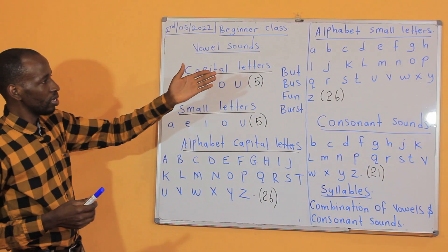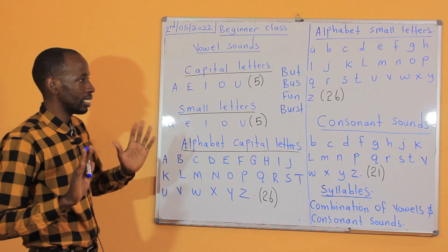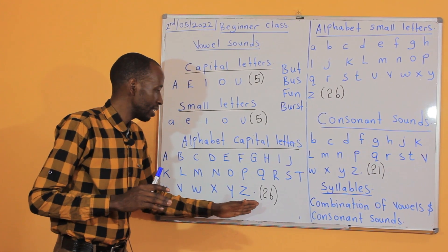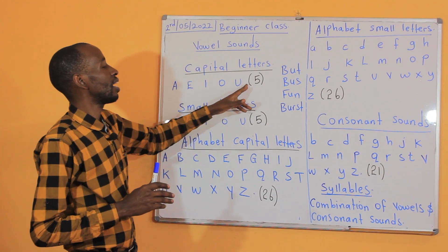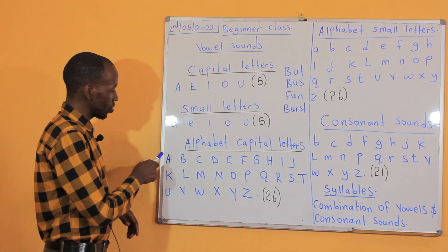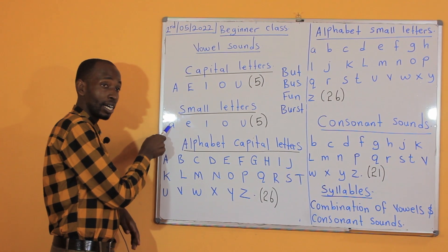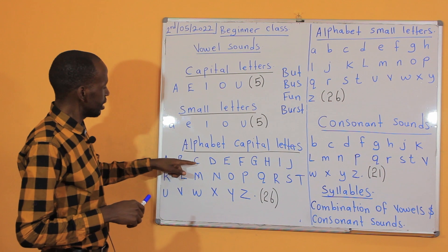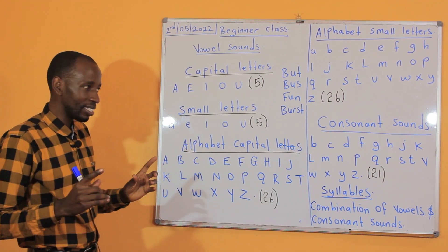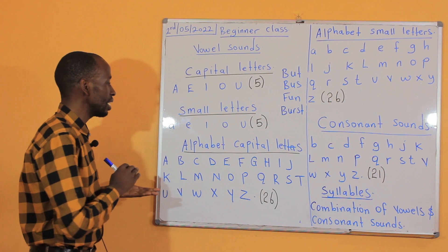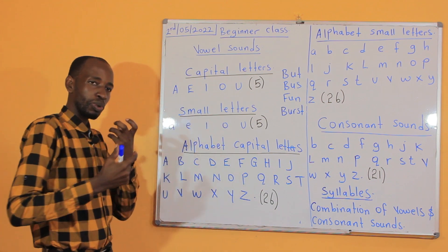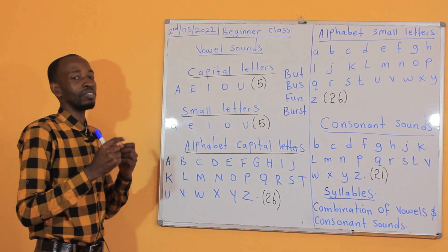If you go to small letters, same pronunciation — we don't change how you read them. These are 26 alphabet sounds and these are five vowels. Now when you come here, this one is read as A but this one is read as R. The sounds are different — they are not the same. If we say alphabet sounds, we pronounce them in a different way; if we say vowel sounds, we also pronounce them in a different way. That's very important for you to understand.